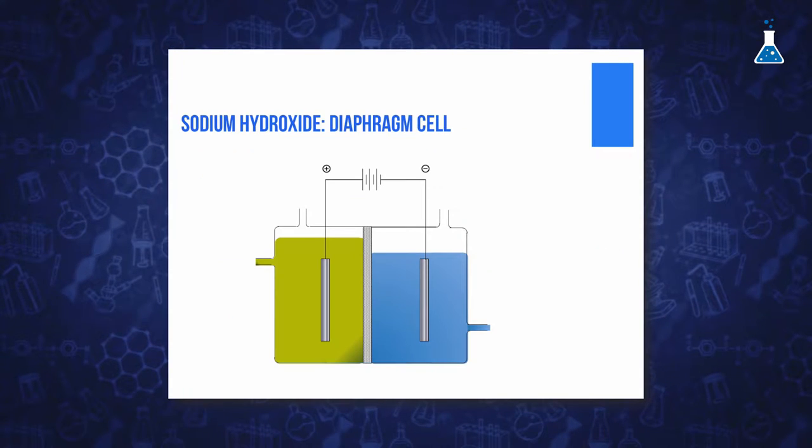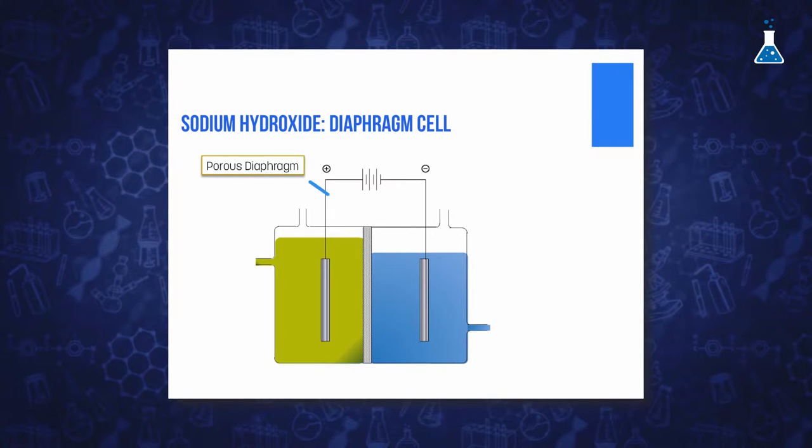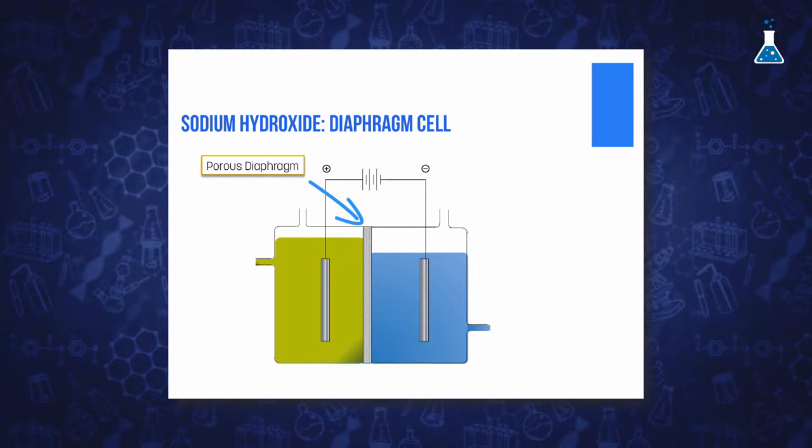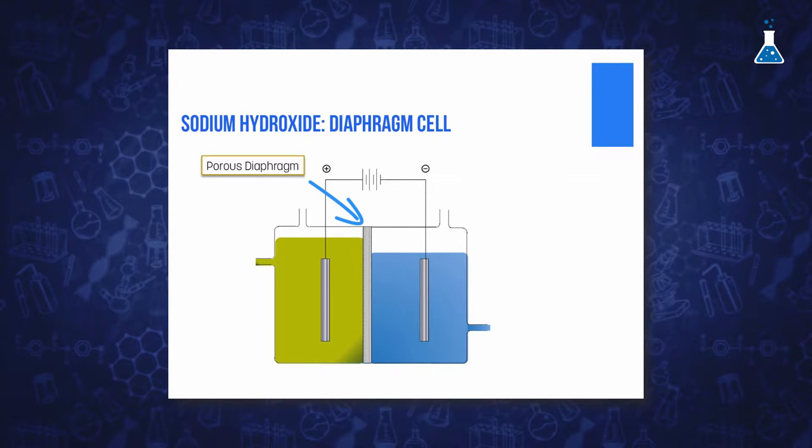In the diaphragm cell, the anode area is separated from the cathode zone by a permeable diaphragm that used to be made of asbestos, although now is made of polytetrafluoroethylene.